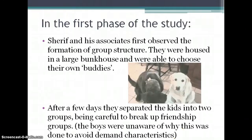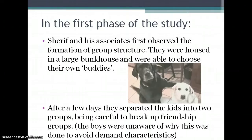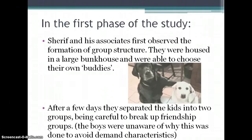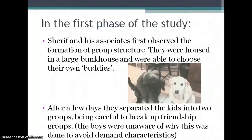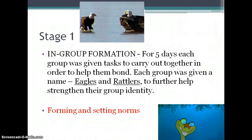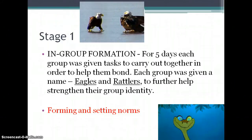In the first phase, Sheriff and his associates observed the formation of normal group structure. All the kids were put together in bunks and allowed to choose their own buddies. After a few days, they were separated into two groups, carefully breaking up the friendships that had formed. The boys were unaware of why this was happening — to avoid demand characteristics and prevent them guessing the researchers were trying to cause competition. For five days, each group was given tasks to carry out with only their own group, to help them bond. They identified themselves as the Eagles and the Rattlers — this is known as the forming and setting norms stage.